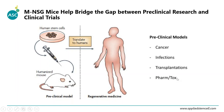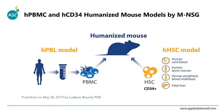Now I would like to introduce how we can use NSG mice to develop a humanized mouse model. There are two major humanized mouse models we provide: one is the humanized PBMC mouse model, and the other uses humanized hematopoietic stem cells, or CD34-positive cells. This depends on the different sources of human cells.